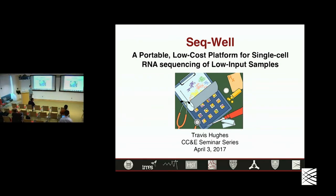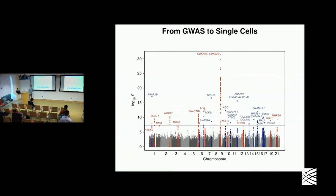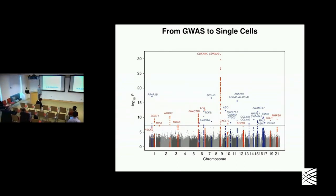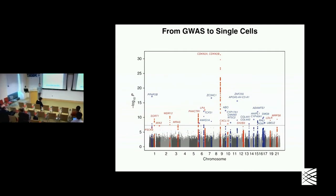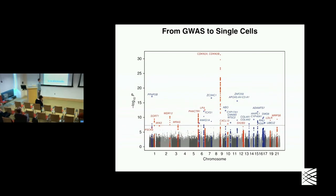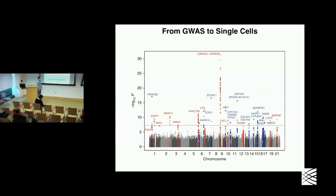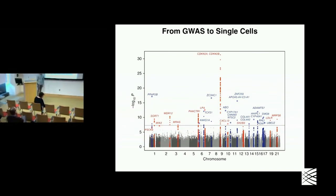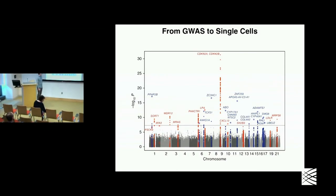I'm an MD-PhD student in Alex Shalik's lab. But before I came to MIT and Harvard, I used to work on GWAS, so I spent a lot of time looking at Manhattan plots. As I looked at them, I sort of came to the realization that mutations need engines to actually become phenotypes.